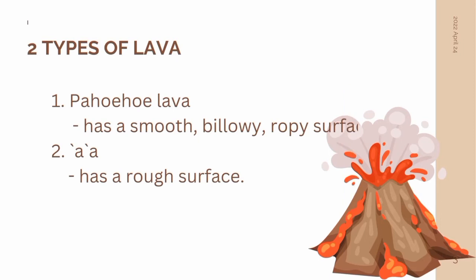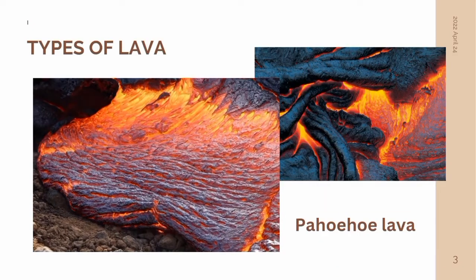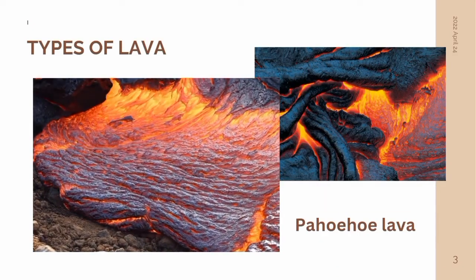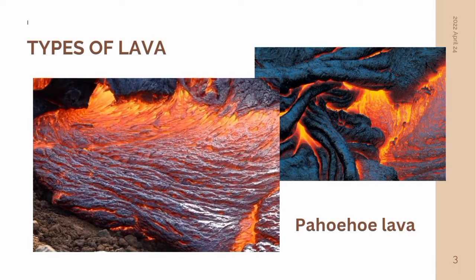Did you know that there are two types of lava? These are the pahoehoe lava and the aa lava. Pahoehoe has a smooth, billowy, ropey surface, while aa has a rough surface. Here are some sample illustrations or images of the types of lava.